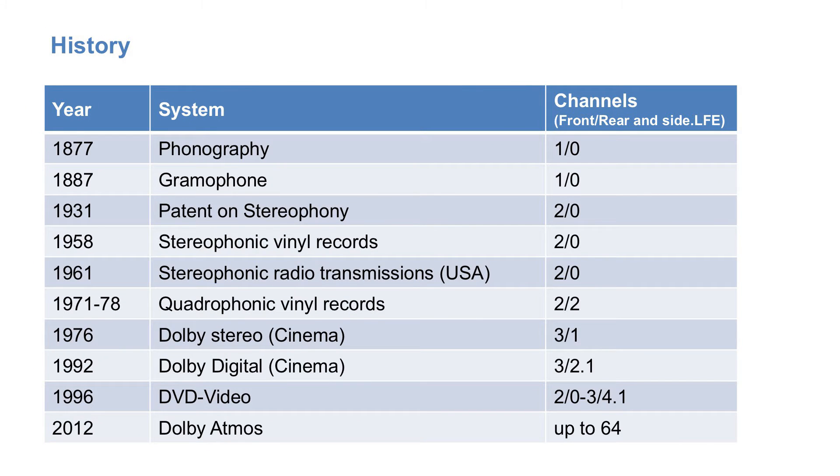In the history of audio, the number of channels used for transmission and reproduction has constantly increased, from the mono layouts of the first recording devices with cylinders and gramophone records, to the first experiments with two-channel recording in the 1930s, to the first stereo recordings for disc and radio in the 1950s and 60s.